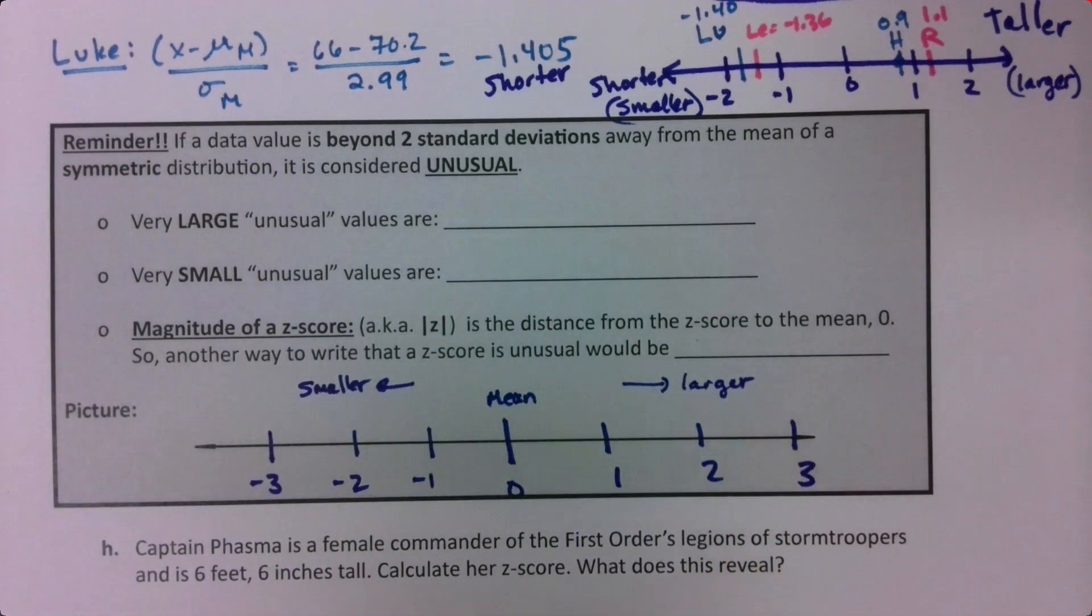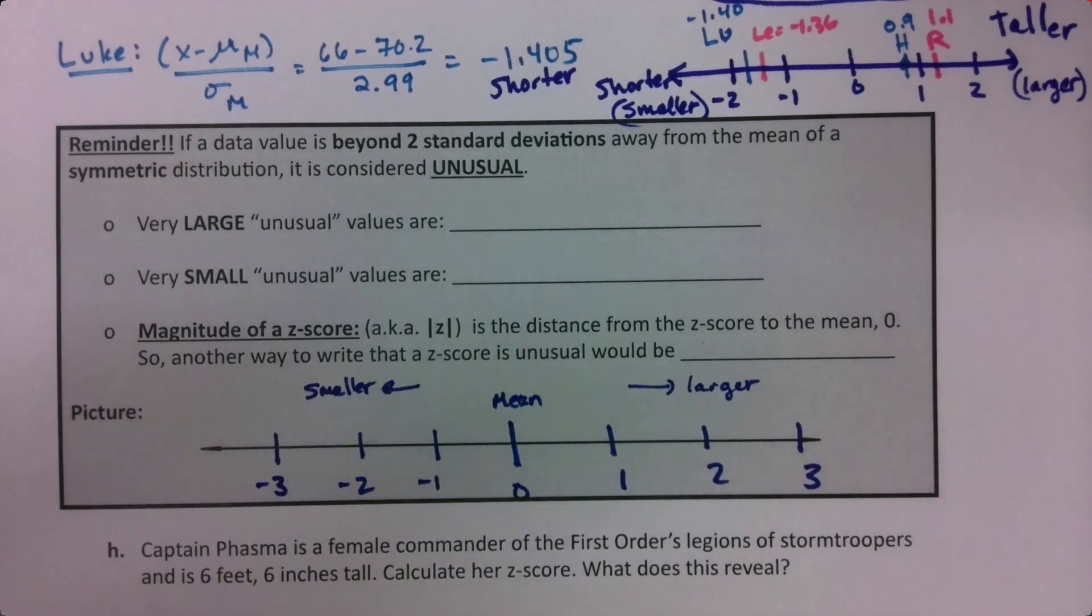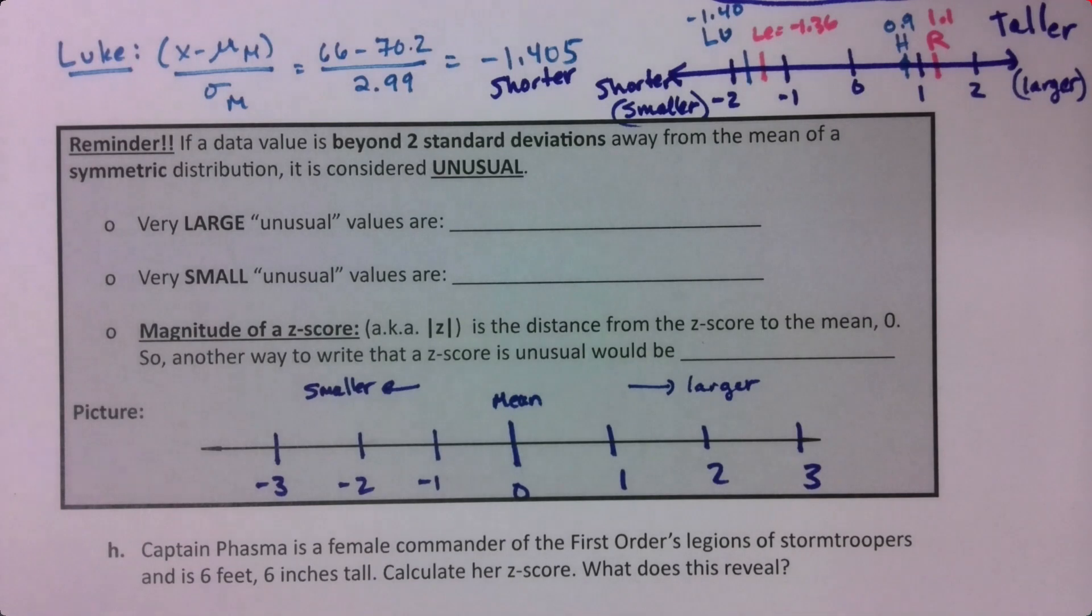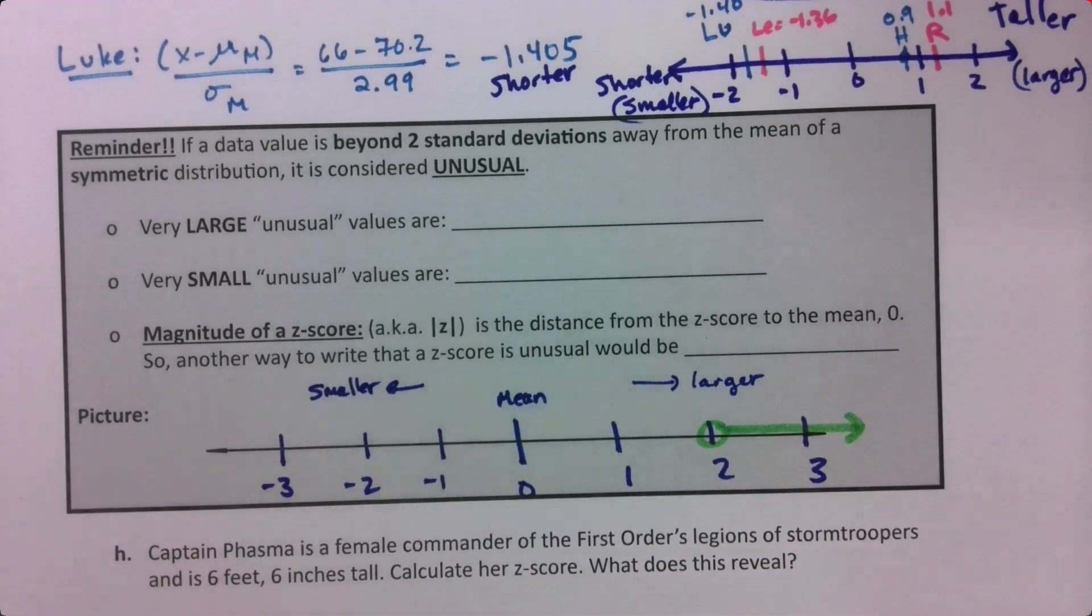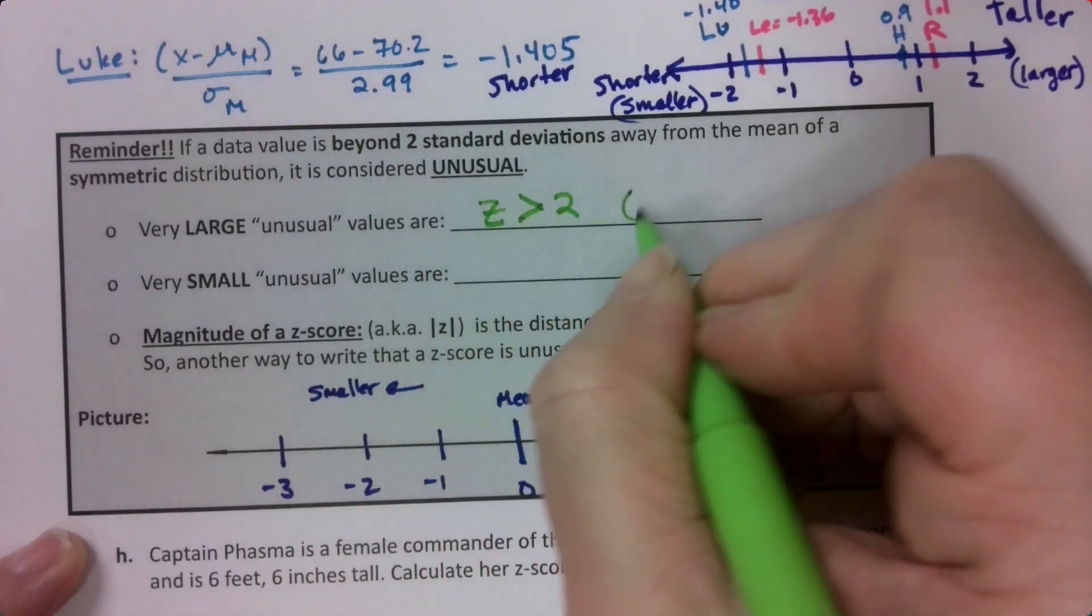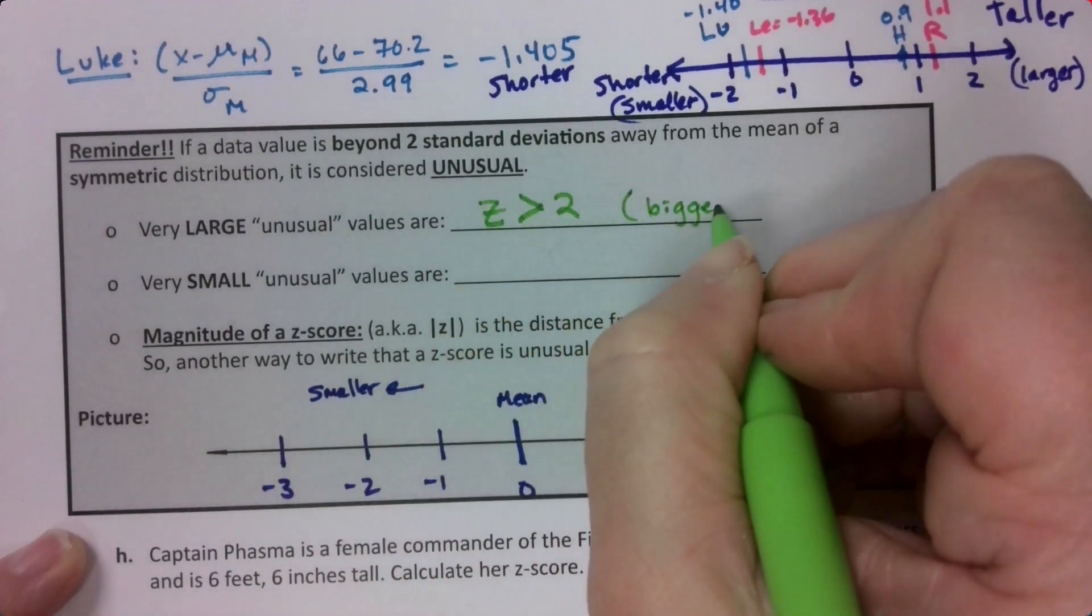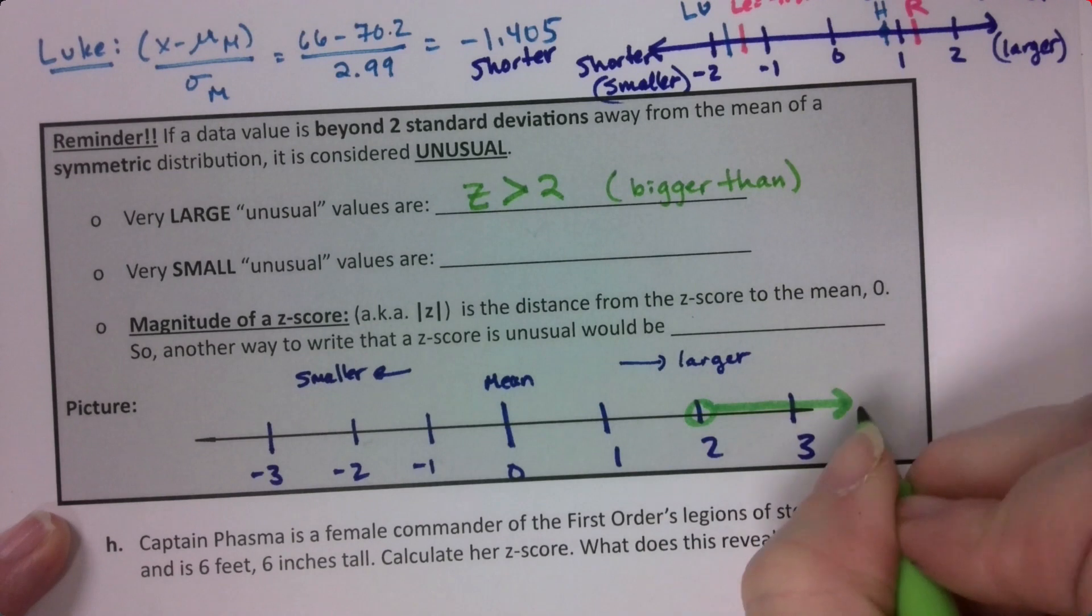Remember what we said in section 3.2: anything that is beyond two standard deviations away from the mean is unusual. Where would the unusually large values be? On the right side, it's anything that's bigger than two. So if your z-score is to the right of two, if Z is greater than two, you're unusually large.